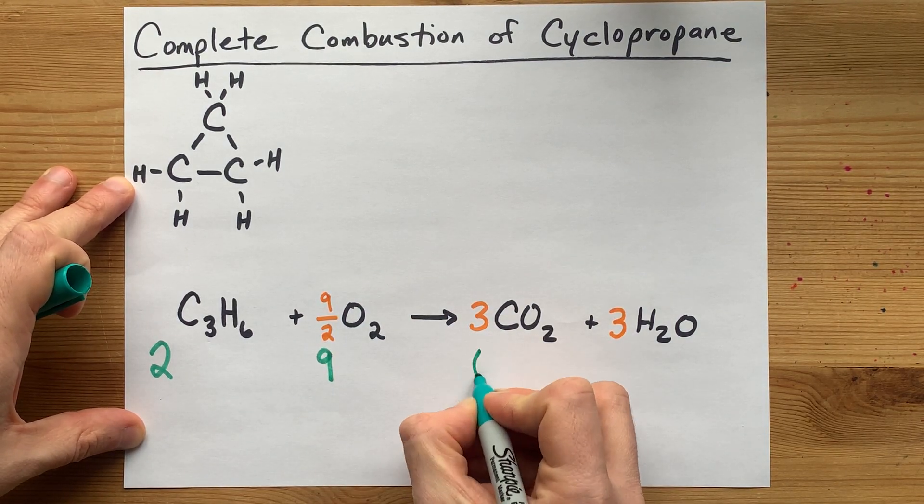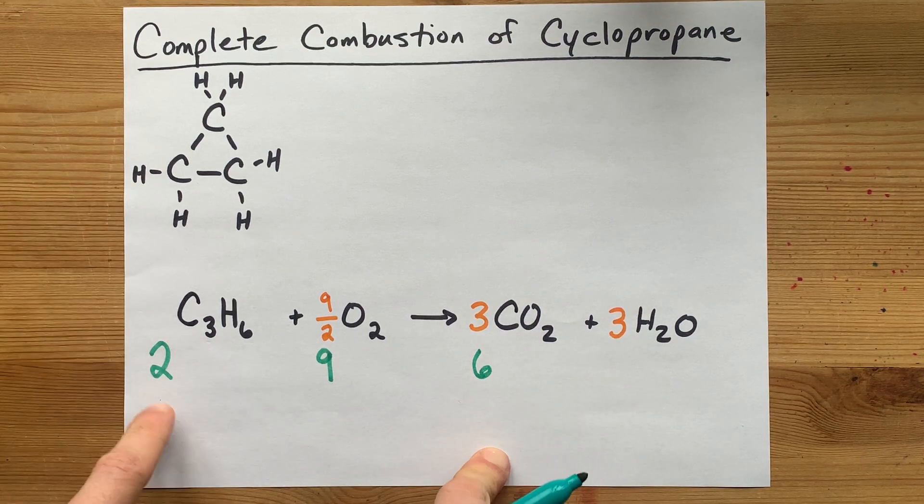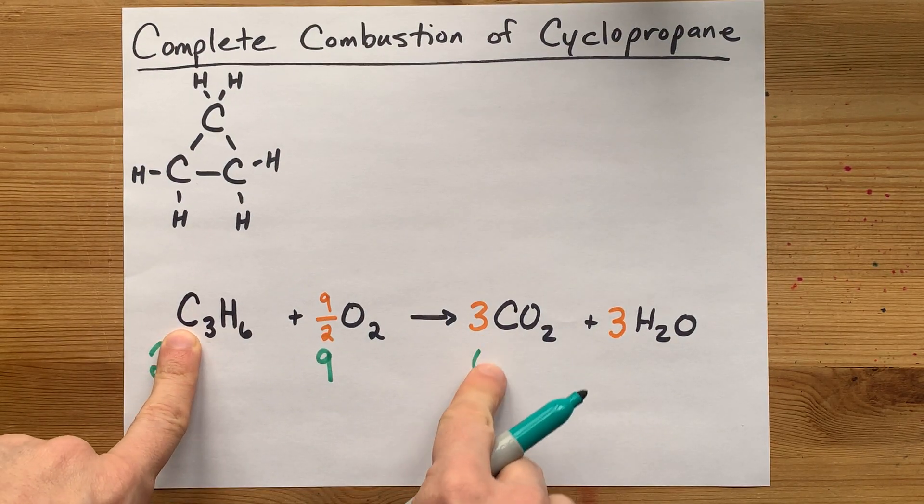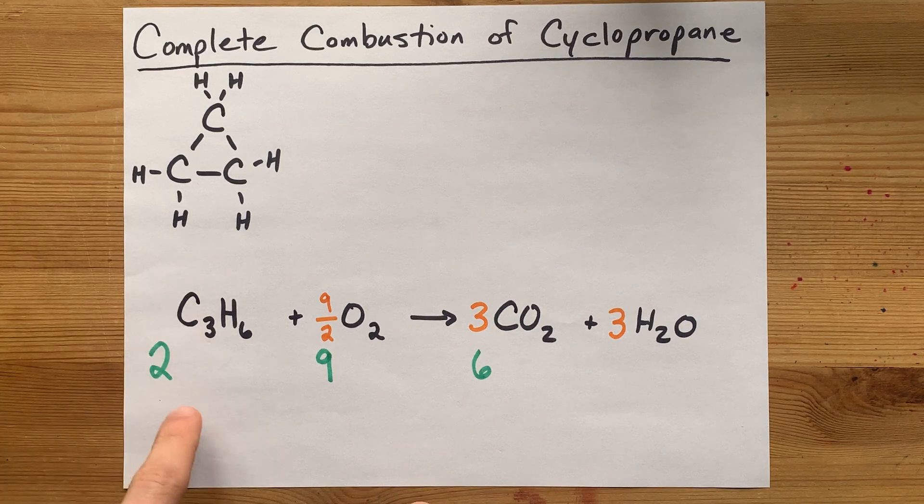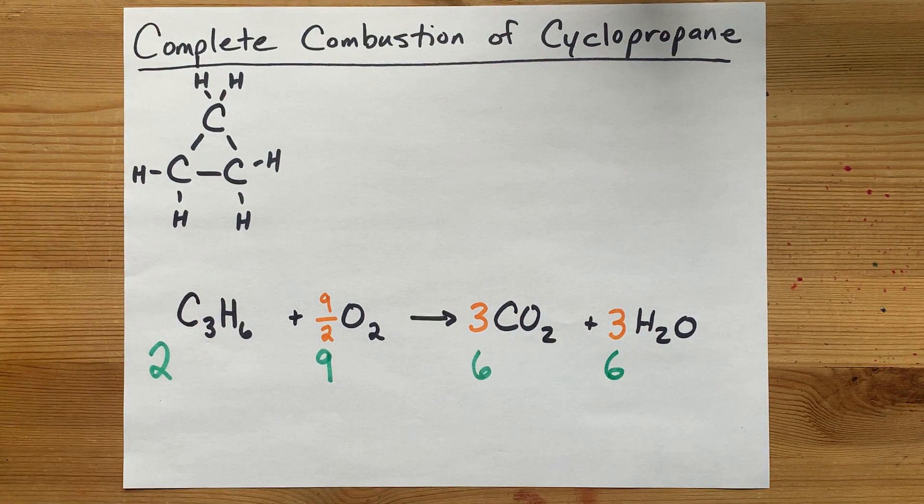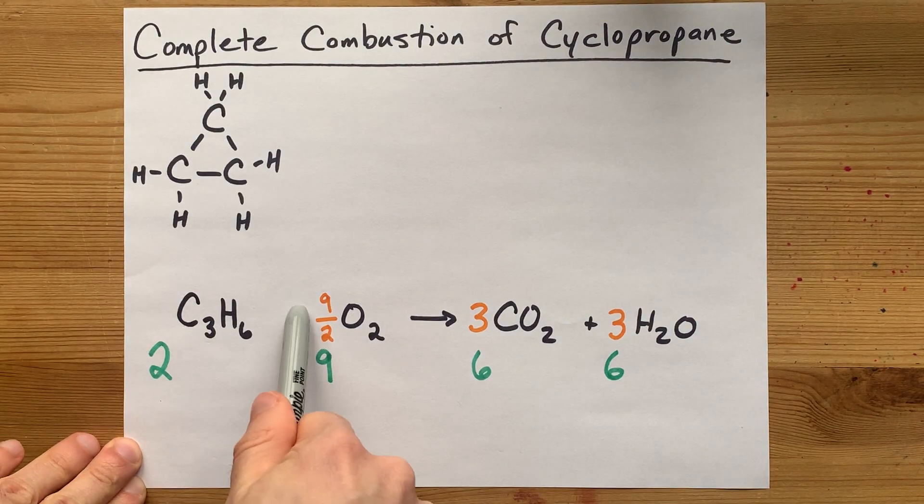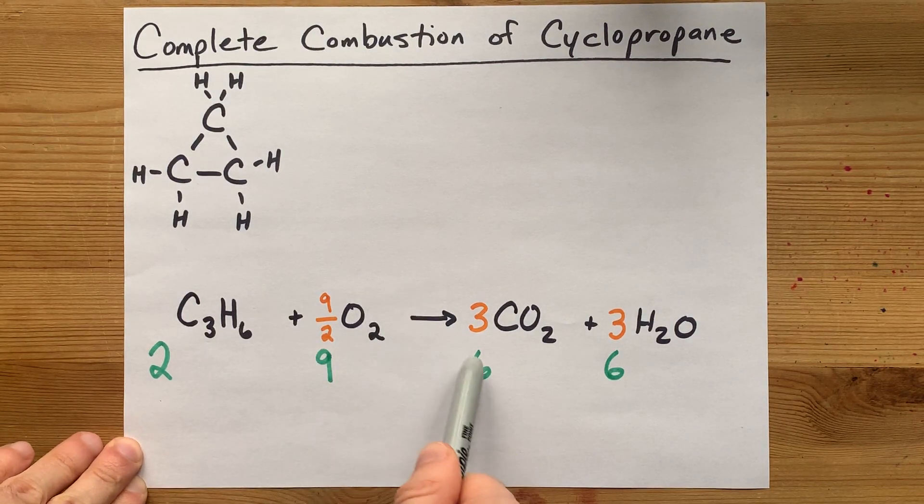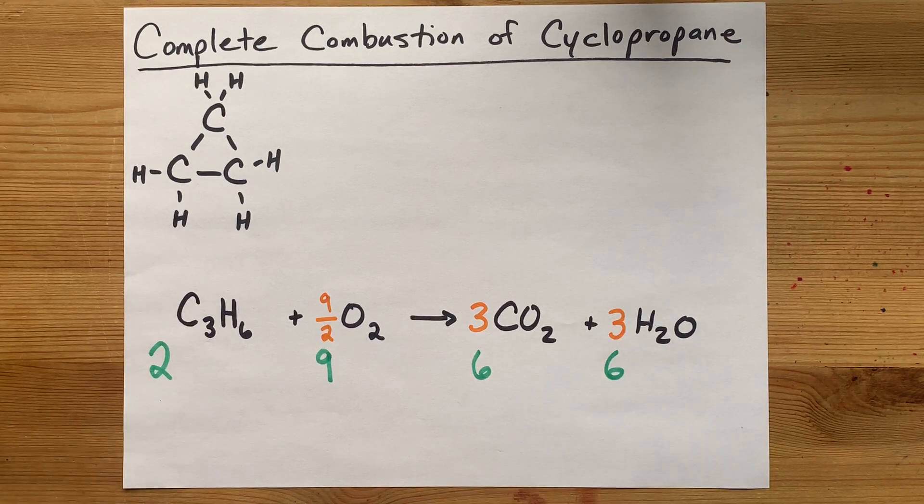That would produce six carbon dioxides. See, two times three is six. Six carbons here as well. And double that to six H2O's. Two cyclopropanes and nine oxygens make six carbon dioxides and six waters. Cool.